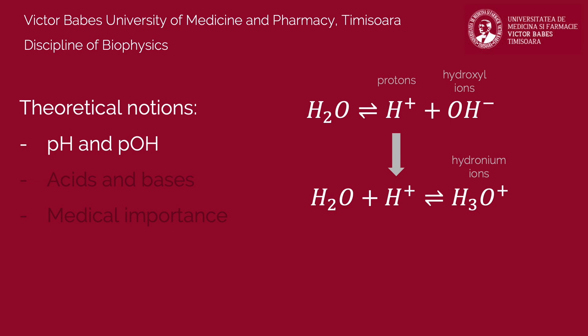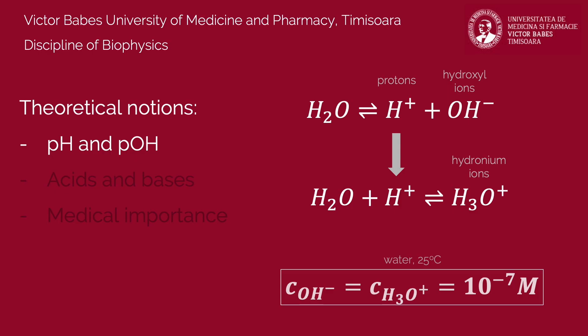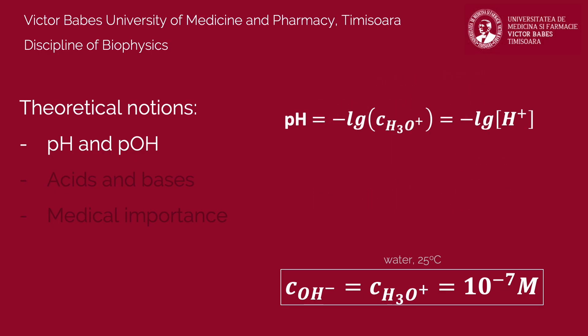In water at 25 degrees Celsius, the molar concentration of hydroxyl and hydronium ions are equal, with a value of 10 to minus 7 molars. To simplify expressing such low concentration values, Sorensen introduced the notion of pH, defined as the decimal co-logarithm of the molar concentration of hydronium ions. The complementary quantity, pOH, is the decimal co-logarithm of hydroxyl ion's molar concentration.